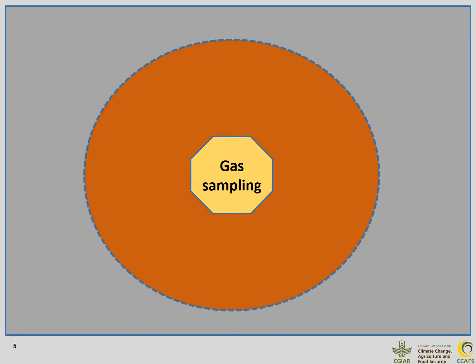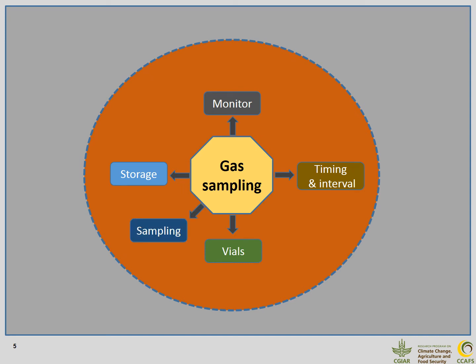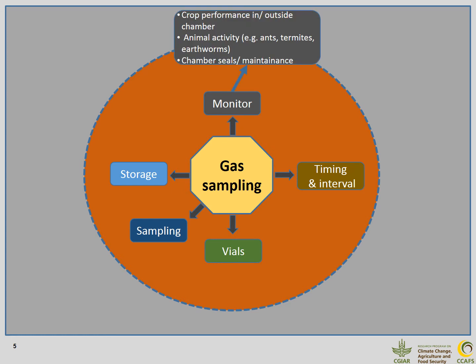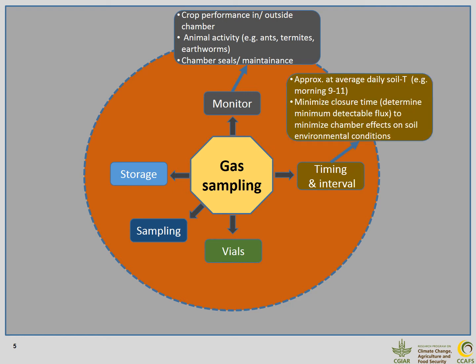Following chamber installation, we should consider gas sampling: what we monitor, how we monitor, when we do measurements, and how we treat our gas samples with regard to temporal and long-term storage. We should not only monitor greenhouse gas fluxes themselves, but also what is going on within and outside the chamber, such as crop performance or the presence of ants or termites. With regard to timing, measurements are normally best taken in the morning hours, as fluxes at this time have been found to be representative for the entire day.